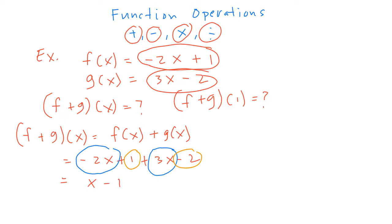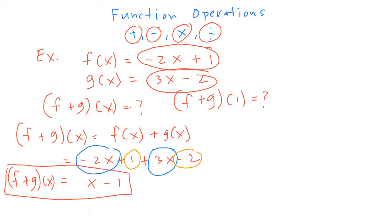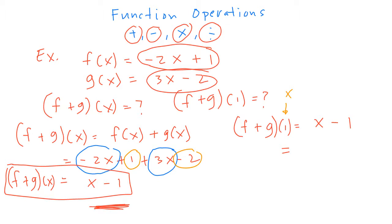And 1 minus 2 gives us -1, so f plus g of x equals x minus 1. That's our answer for adding the two functions. For the second question, f plus g of 1, we already have f plus g of x = x - 1, so we plug in x = 1: 1 minus 1 equals 0. So f plus g of 1 is zero.